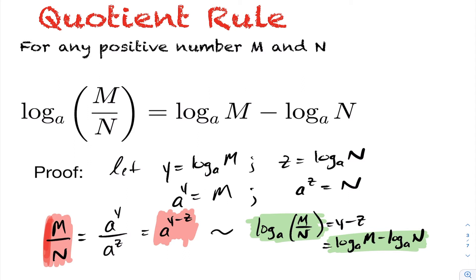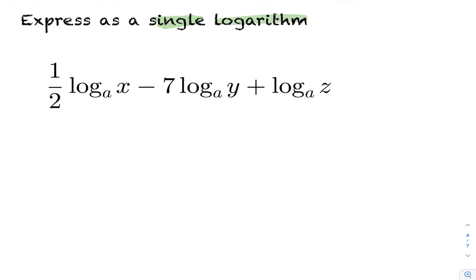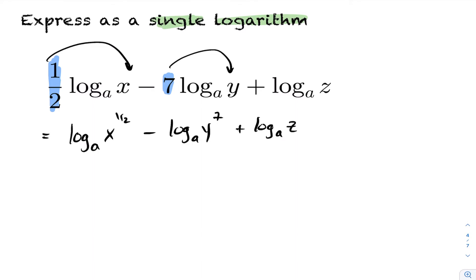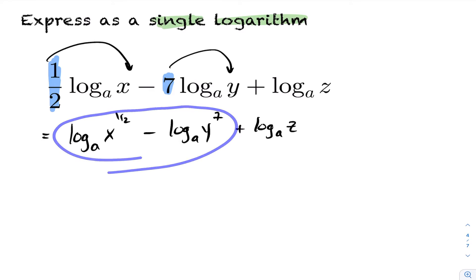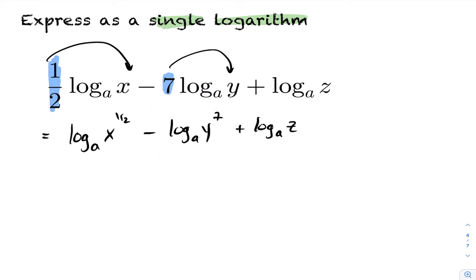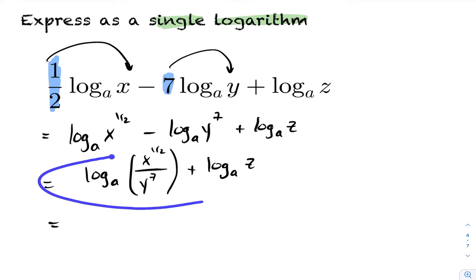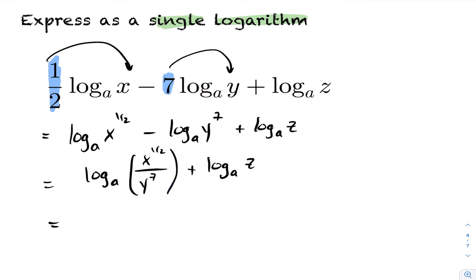Now let's apply these rules to some problems. For the first example, we want to express the following as a single logarithm. The coefficients one-half and seven in front can be brought up as exponents using the power rule. We then apply the quotient rule to the first two expressions, and finally apply the product rule — since adding two logarithms with the same base means we can combine them into multiplication — giving us the expression as a single logarithm.